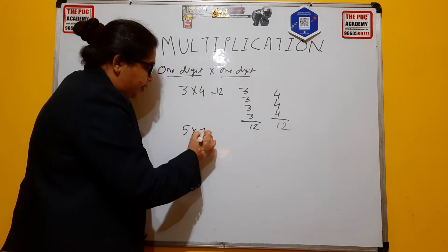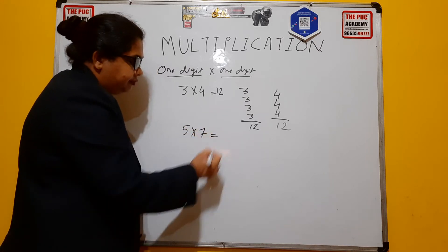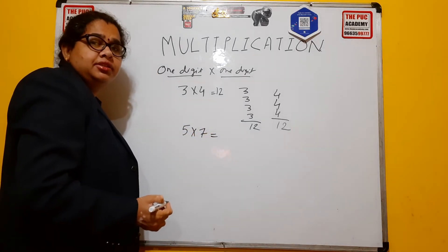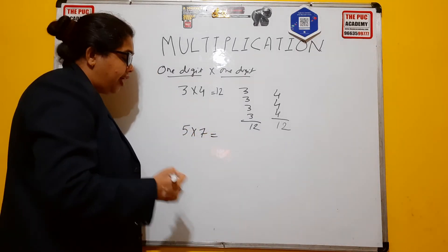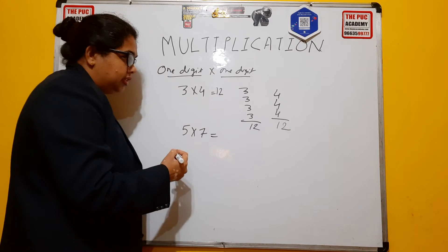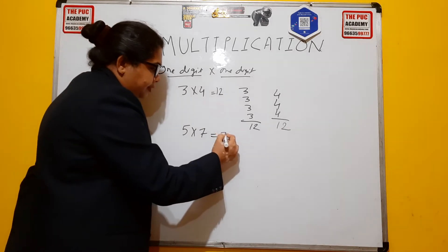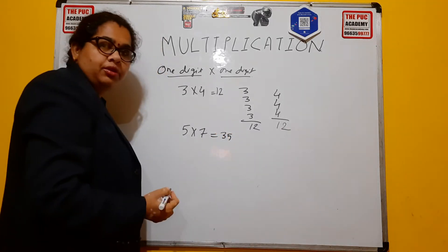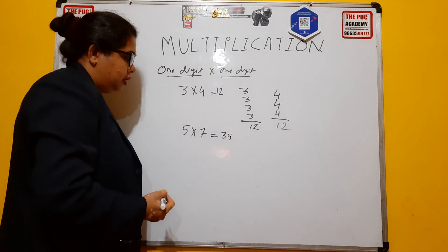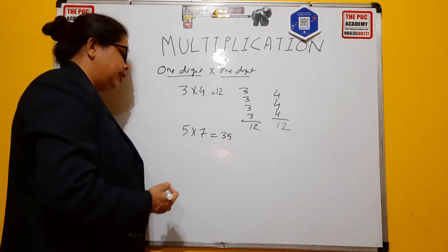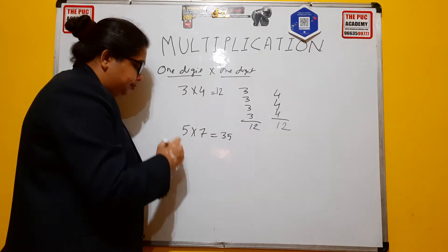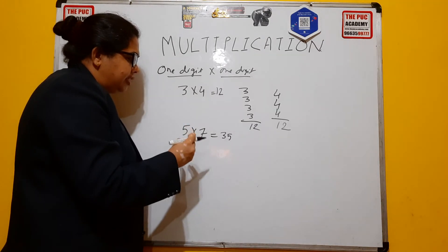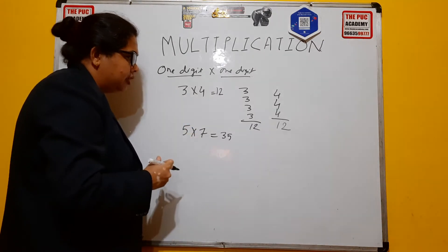Now take another example: 5 into 7. How much, children? 5 into 7 is 35.